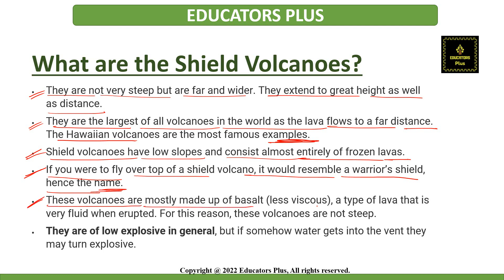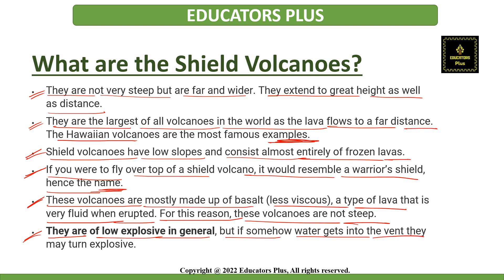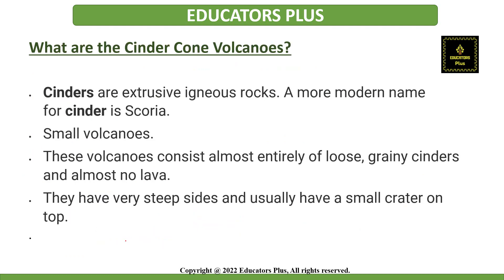These volcanoes are mostly made up of basalt, a type of lava that is very fluid when erupted. For this reason, these volcanoes are not very steep. They are generally low explosive, but if water gets into the vent, they may turn explosive. The next type is cinder cone volcanoes. Cinders are extrusive igneous rocks, and a more modern name for cinder is scoria.